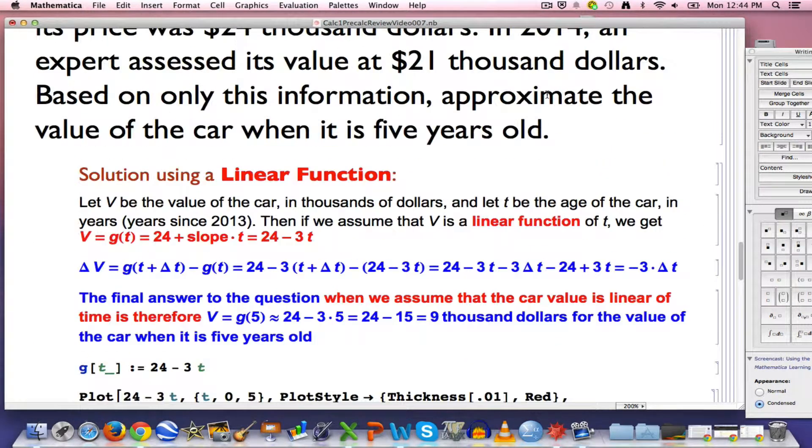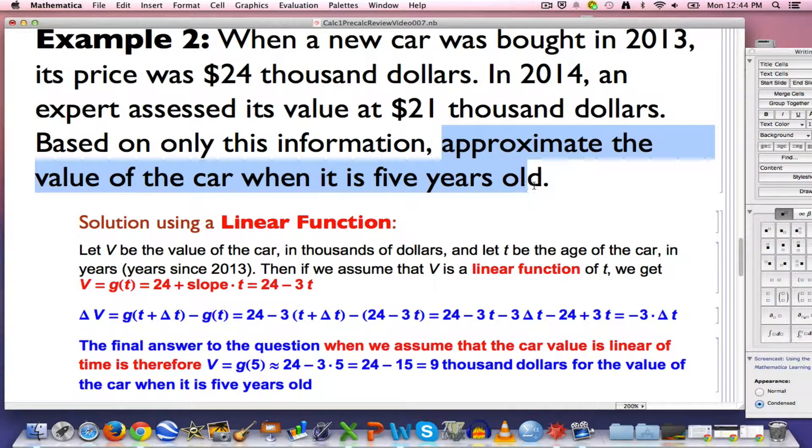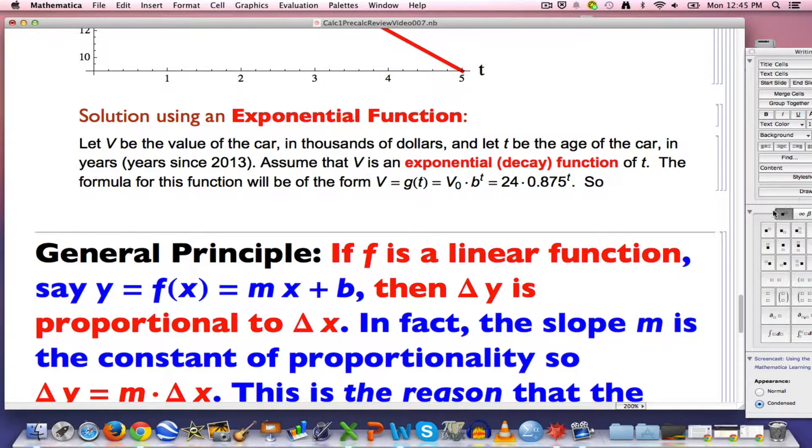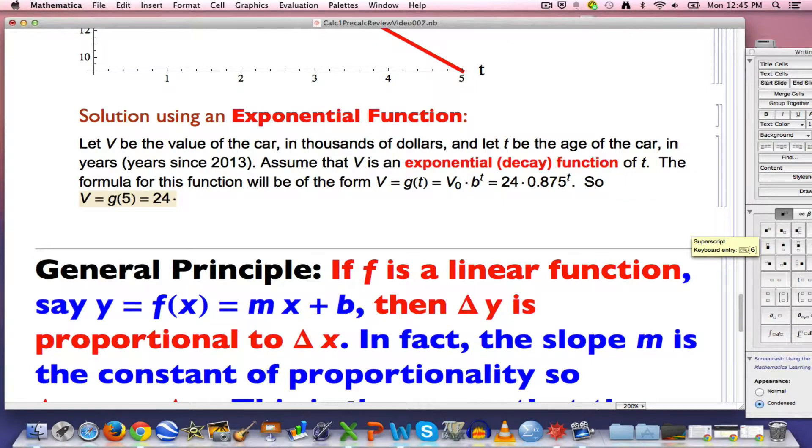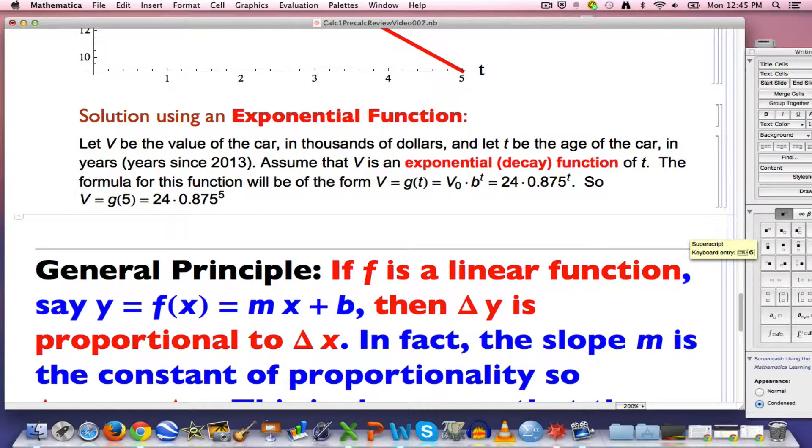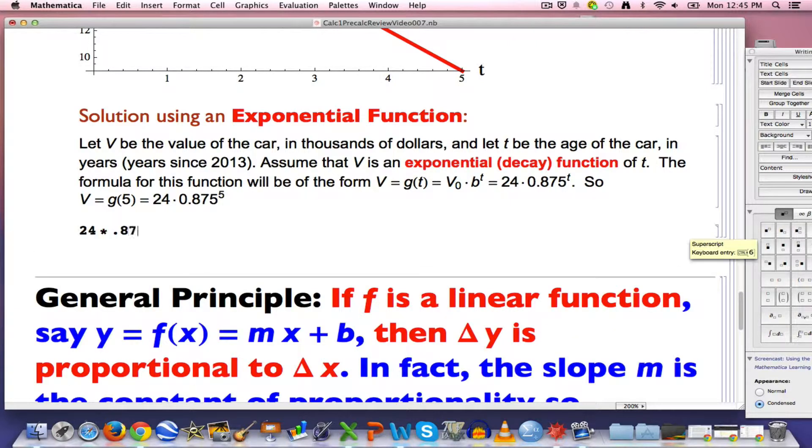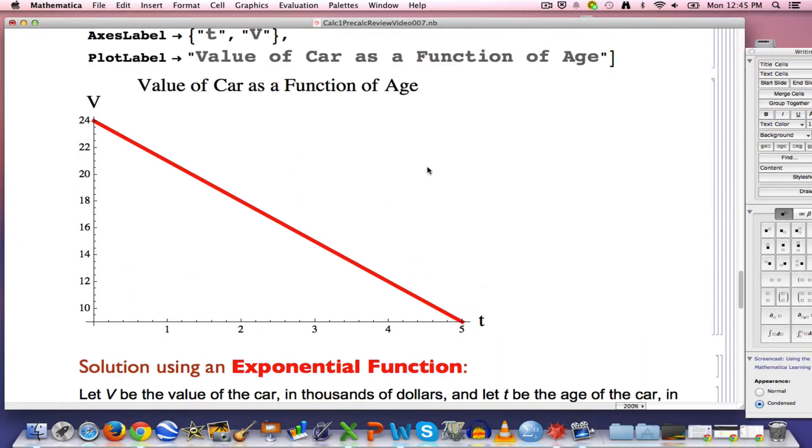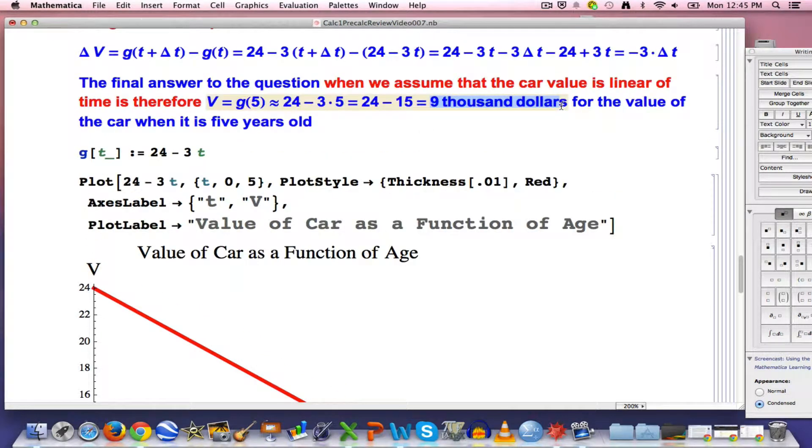Now we want to answer the question. We want to approximate the value of the car when it is 5 years old. The linear model gave us an approximated value of $9,000. What will the exponential model give us? It'll give us g of 5, the value after 5 years, as 24 times 0.875 to the 5th power. The answer is about 12.3 units, which would be $12,300. That would be our final answer if we use an exponential model here, higher than for a linear function where we got $9,000.